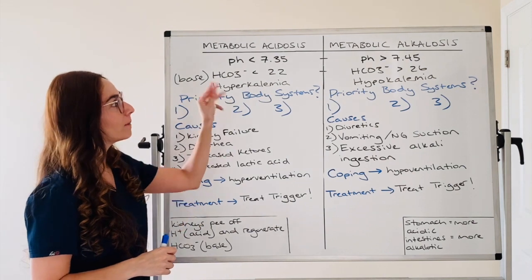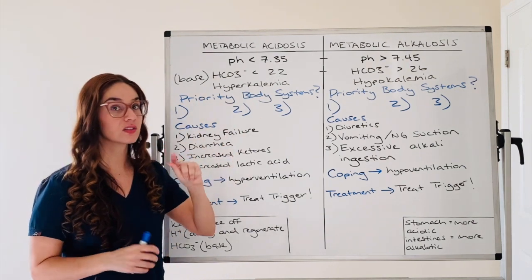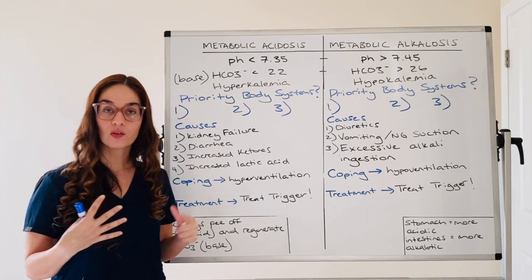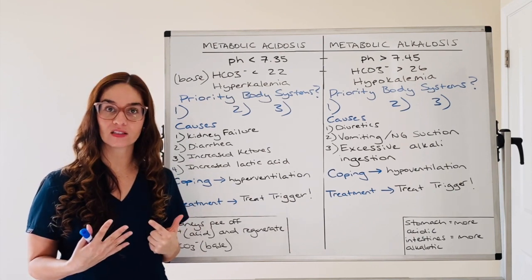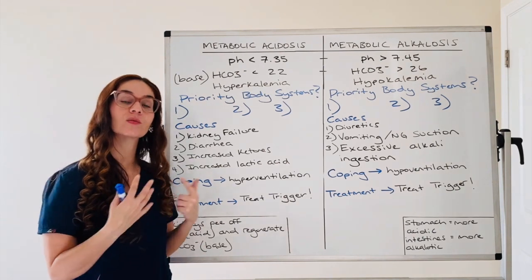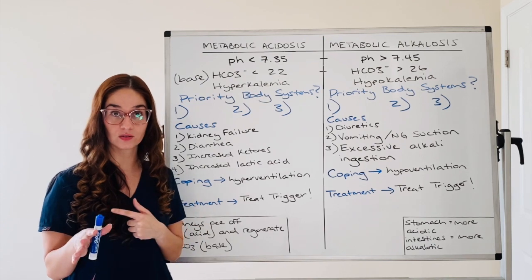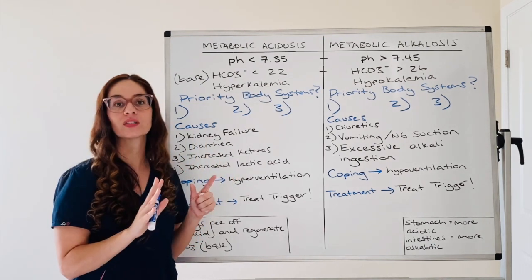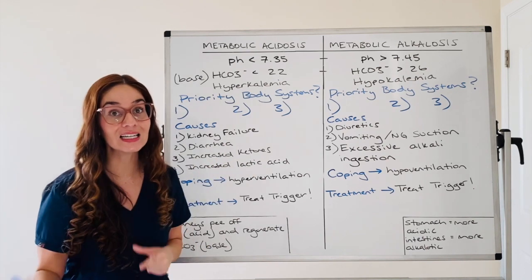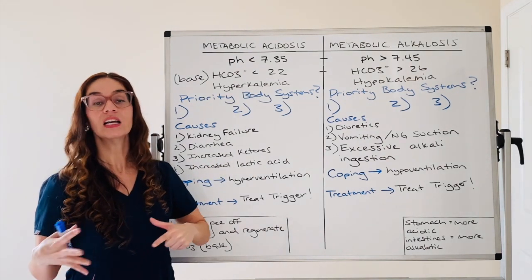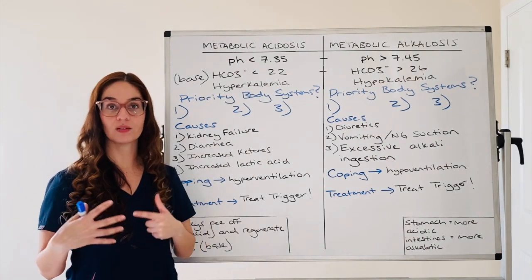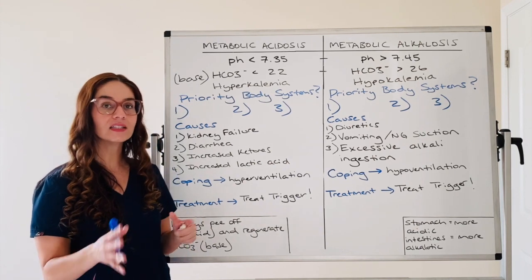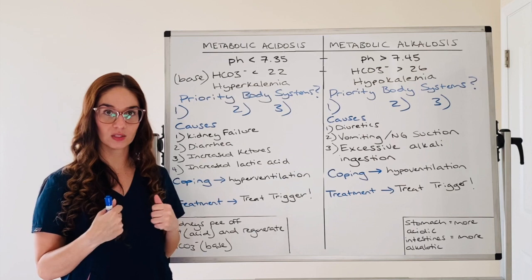So metabolic acidosis versus alkalosis — we are not thinking carbon dioxide or the lungs. If our lungs were affected, we would be thinking respiratory acidosis versus alkalosis. Respiratory acidosis, for instance, can lead to metabolic acidosis if untreated and the patient gets critically ill. But I don't want you to think about the lungs with this.